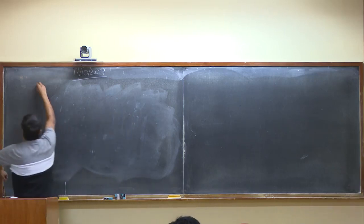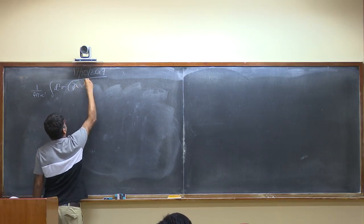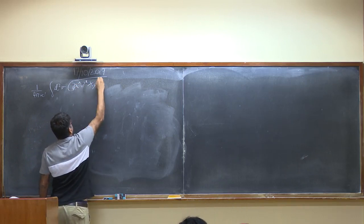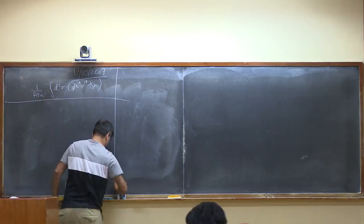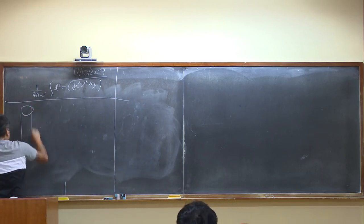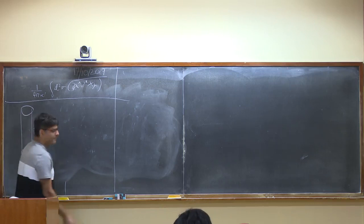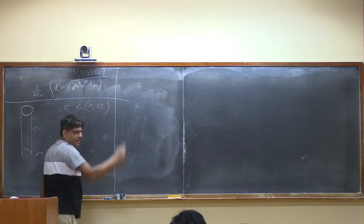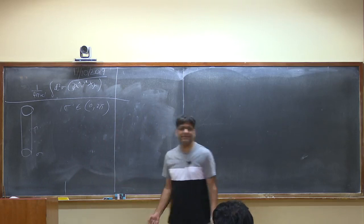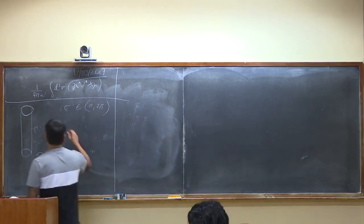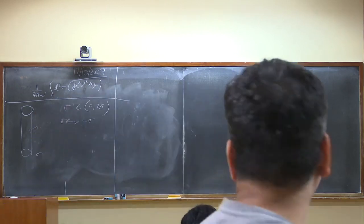Let's start with the closed bosonic string. The action is 1 over 4π α' times d²σ ∂X ∂X. We can think of this on a cylinder — there's a σ coordinate and a τ coordinate, and σ belongs to 0 to 2π; everything is periodic. This theory is invariant under a parity flip: σ goes to minus σ.